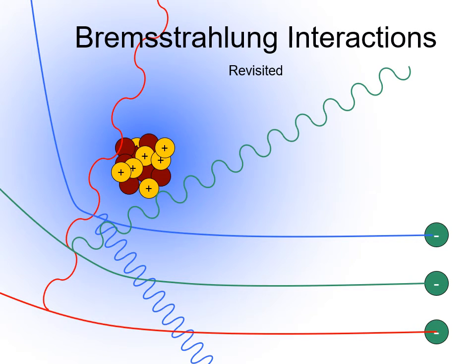Electrons that interact with the nucleus at the greatest distance are slowed down a slight amount, and the x-ray photon they produce has a very low energy.